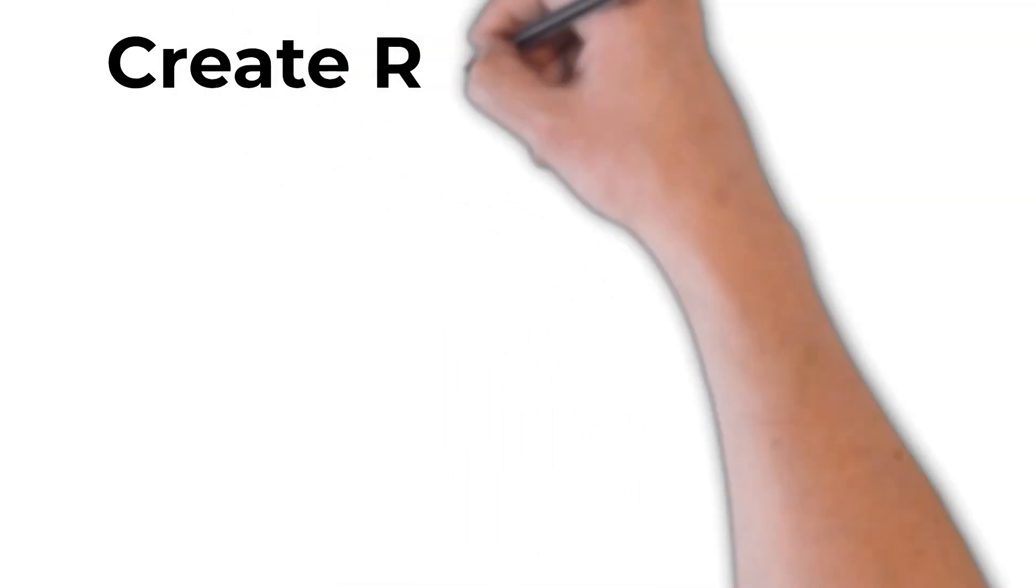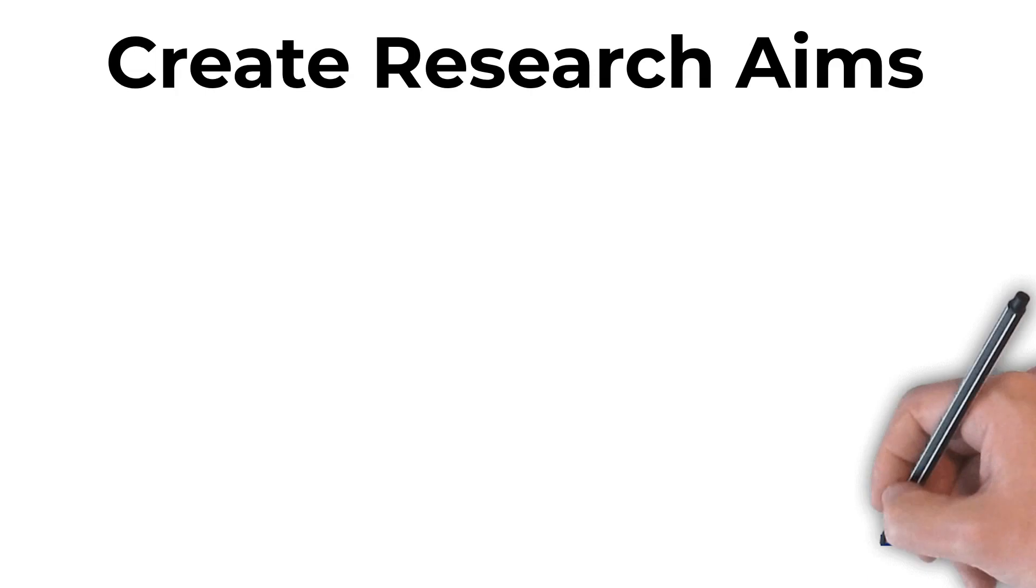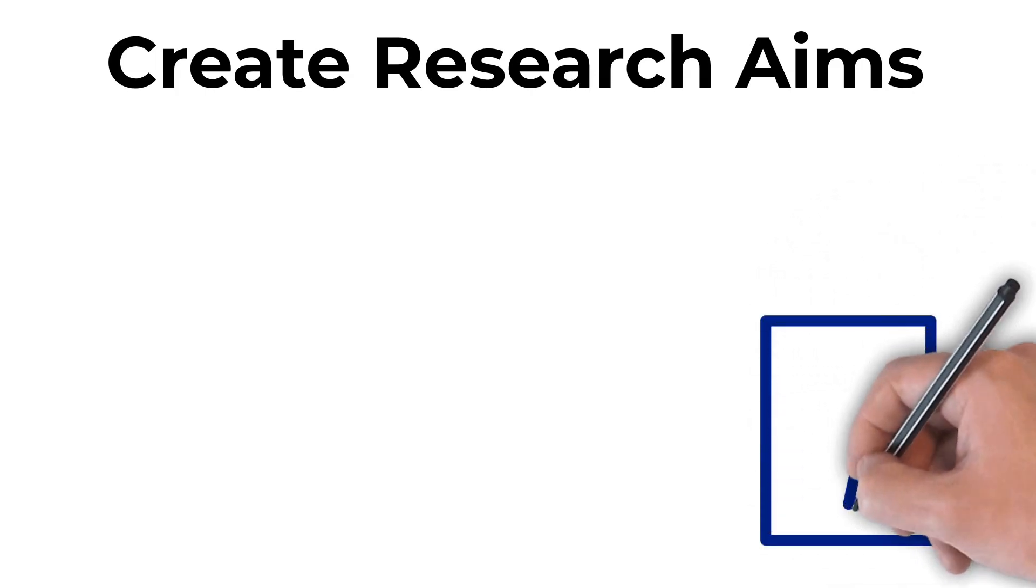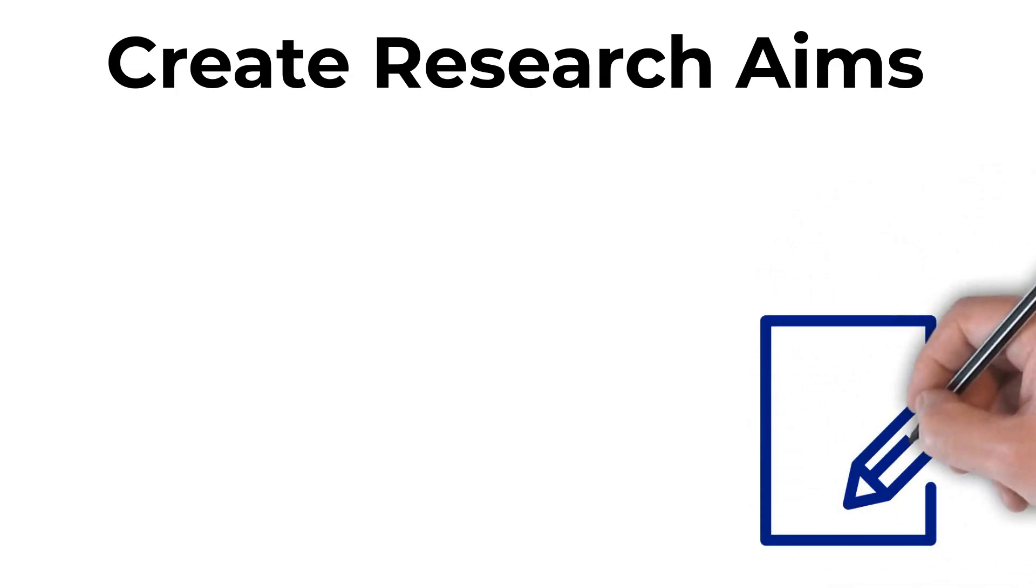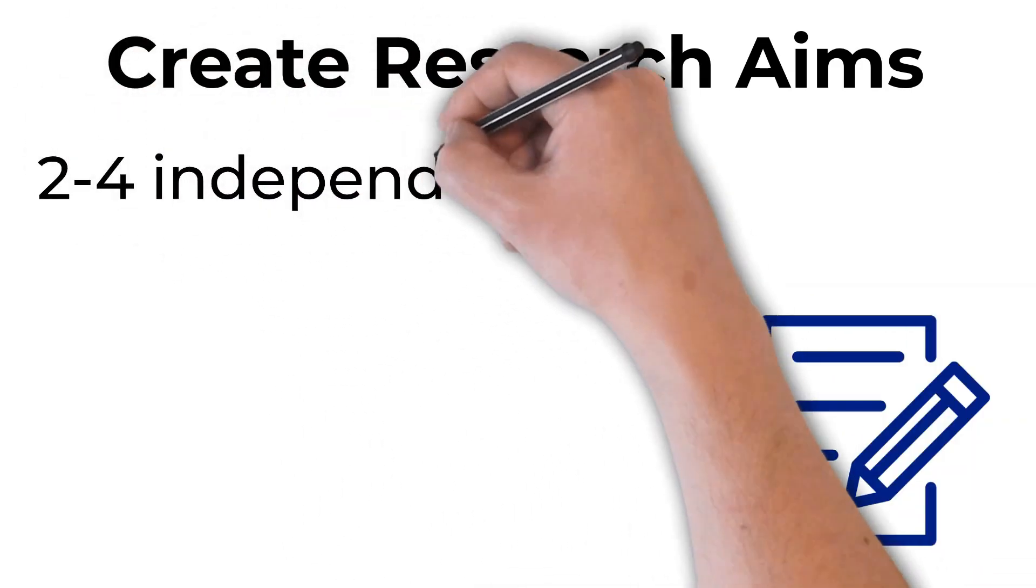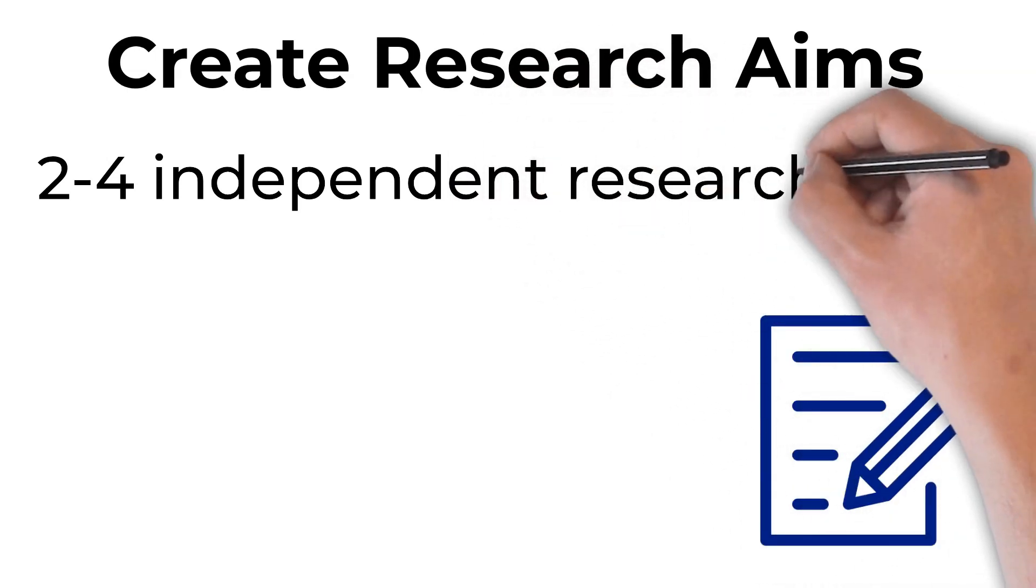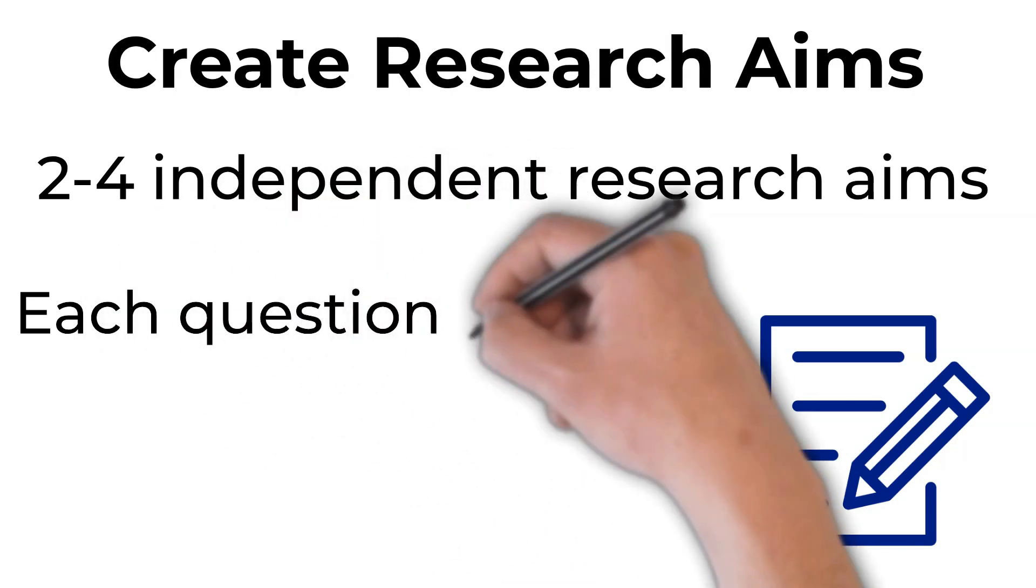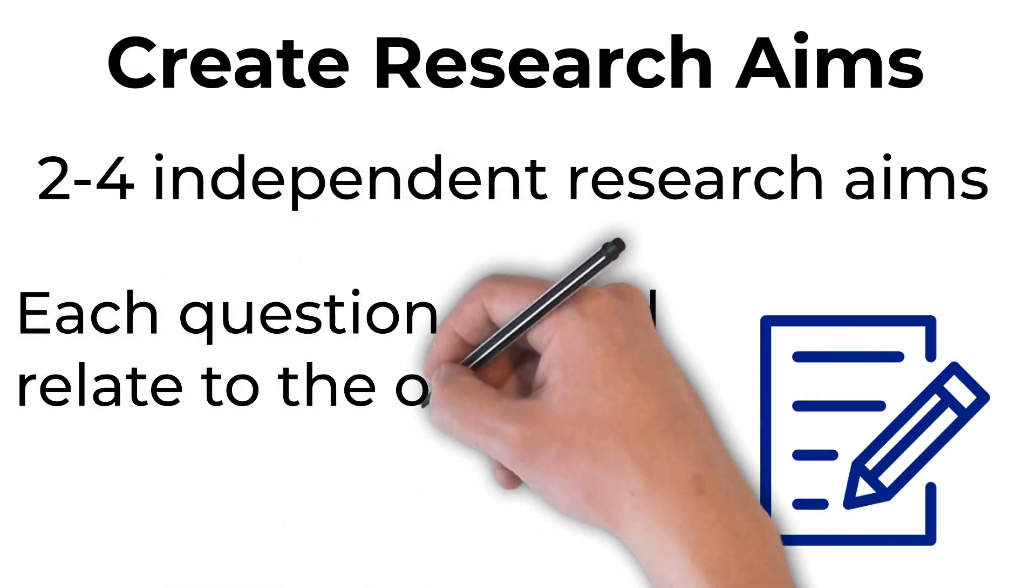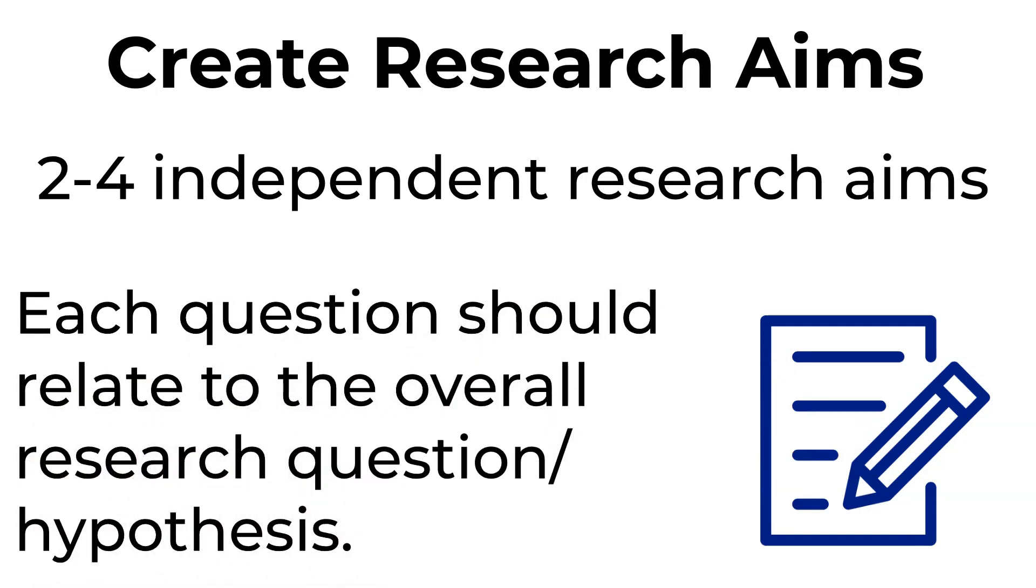Once you know that your research idea is a good one to write a proposal on, you want to start creating your research plan. The first step is creating your research aims. In your aims, you want to draft two to four different phases of your research or independent research aims so that one aim is not dependent on the other. Make sure that each question relates to the overall research question or hypothesis and that they're all interrelated, not just random experiments that you want to do.